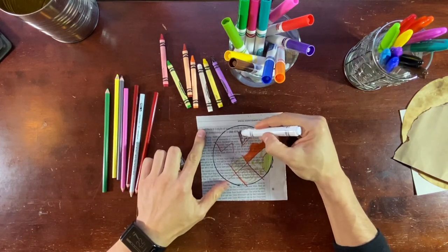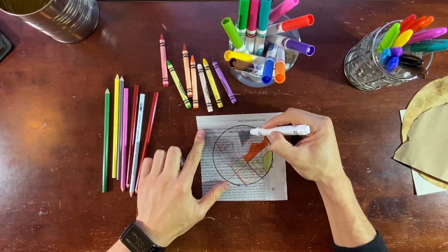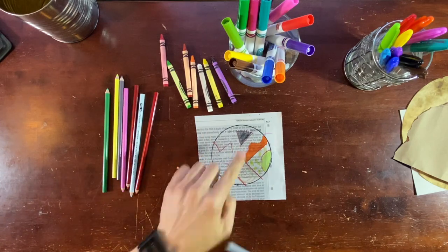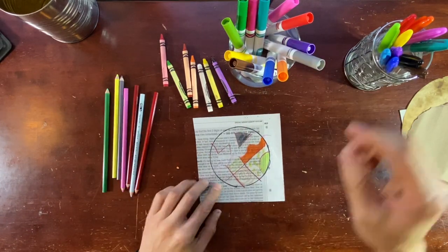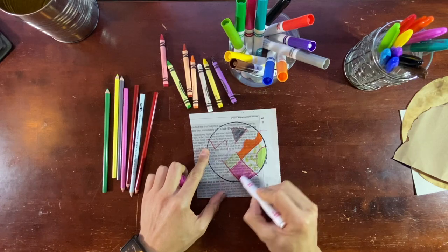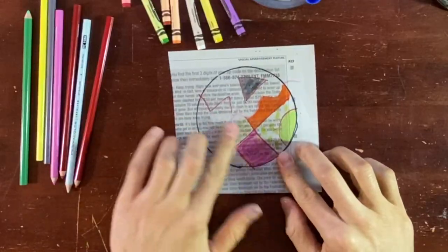Now I'm going to overlap some marker on the color pencil. Ah look. Look at that. I can see the crayon underneath that as well. See. We're discovering what goes well.